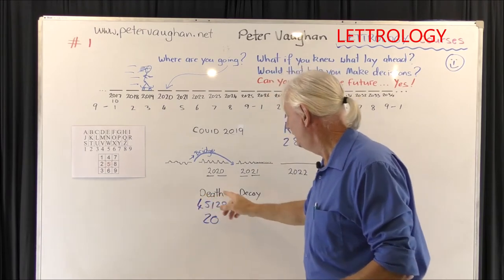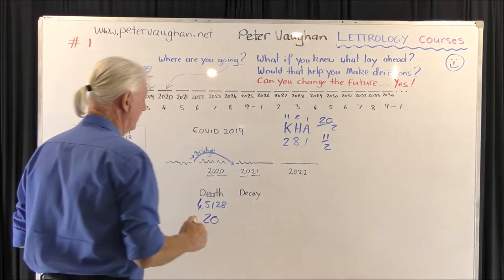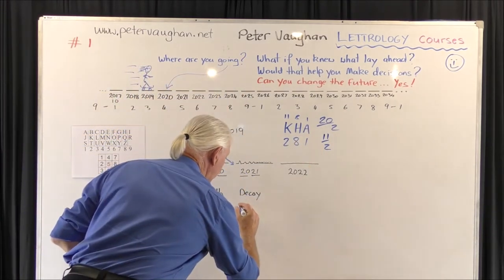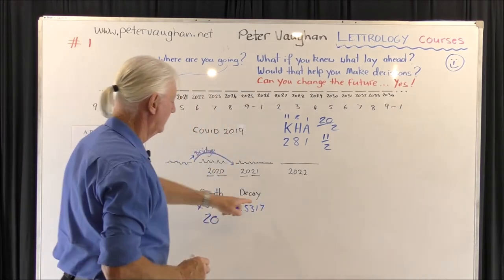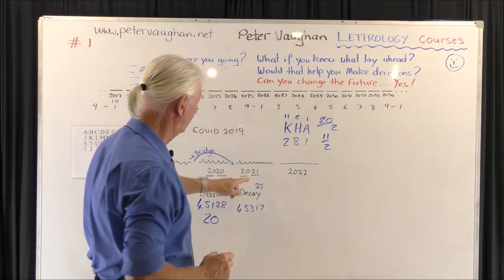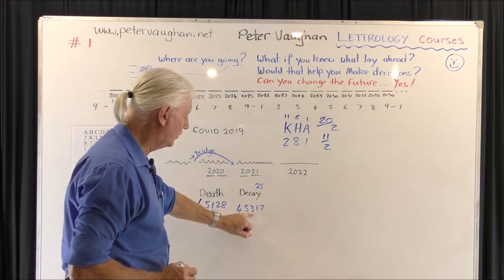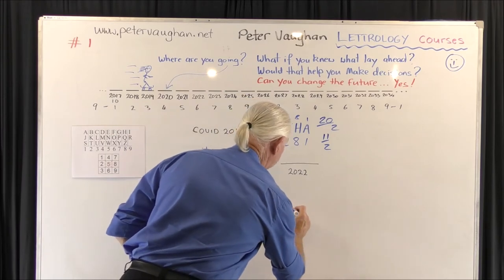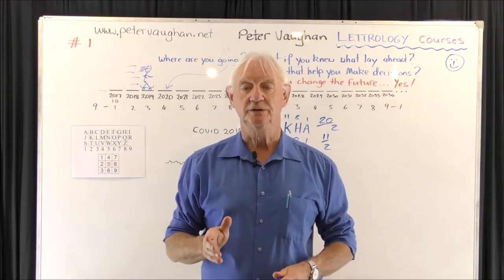So if death equals 20, what about the word decay? Because death and dying — it's the same kind of thing. So I could go 4 and 5 and 3 and 1 and 7. Because Y happens to be the 25th letter of the alphabet and 2 and 5 is 7. So we've got 4 and 5 is 9, then 3 is 12, 1 is 13 and 7 equals 20. This is not coincidence.